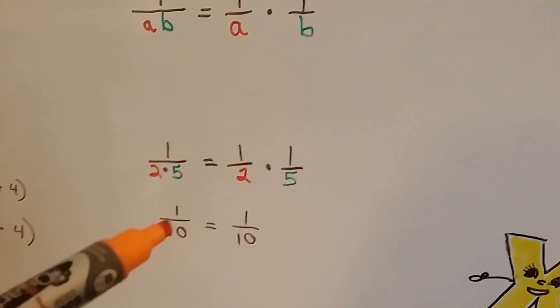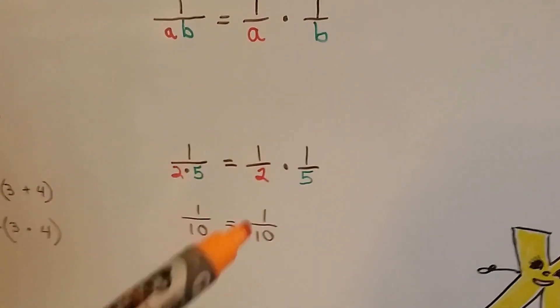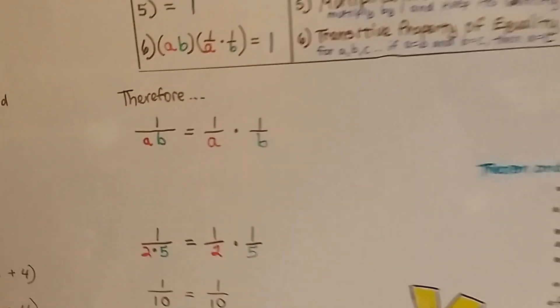It's like saying 1 over 2 times 5 is equal to 1 half times 1 fifth. When we multiply this, we get 1 over 10, and this is 1 over 10.